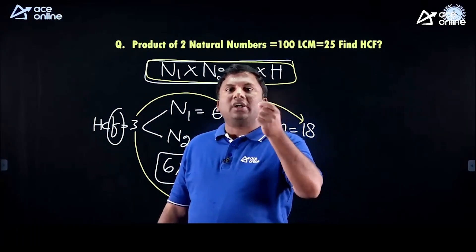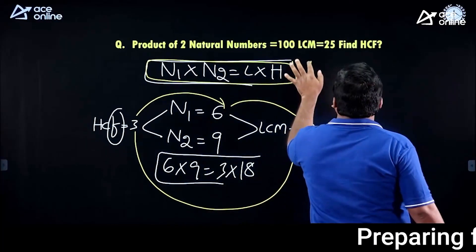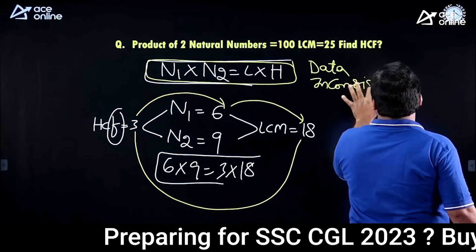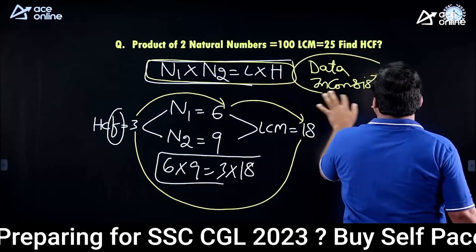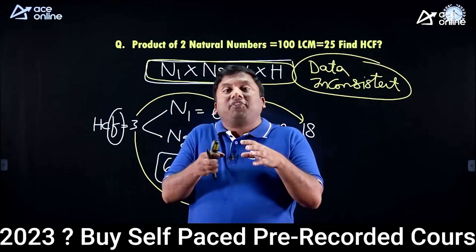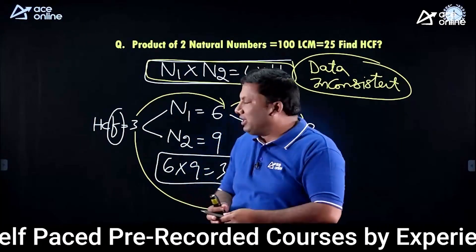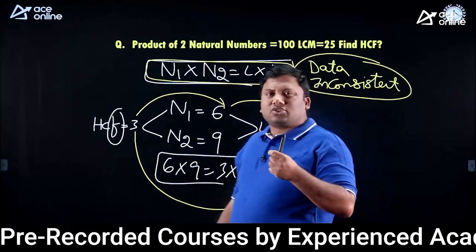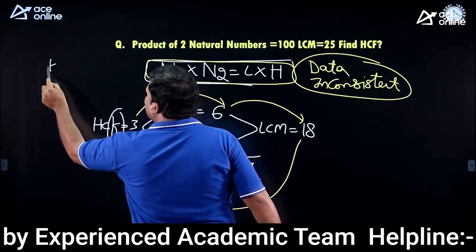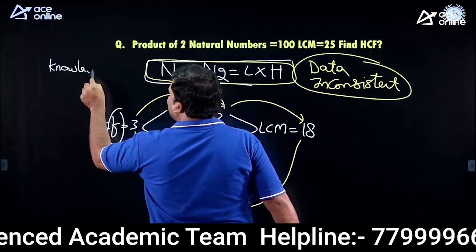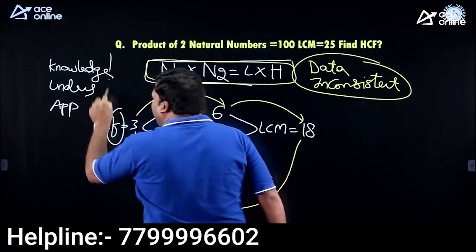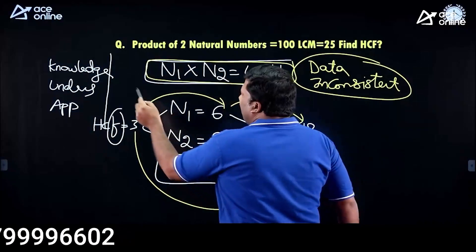Actually, I kept you under a trap. The answer for this question is data inconsistent. I wantonly gave this question to make you understand that this formulae is used only when HCF is a factor of LCM — only when HCF divides LCM. HCF dividing LCM is a basic right property. There are two kinds of students: students who clear the examination in the first attempt acquire knowledge, understand concepts, and apply concepts. Students who probably do not clear aptitude examinations memorize things.